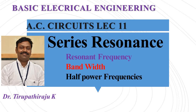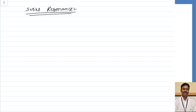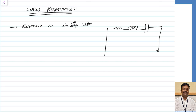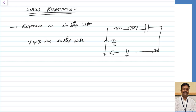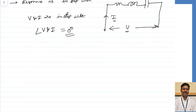Good morning all. Today we are going to discuss series resonance. Resonance means in step with — the meaning of resonance is that the circuit is at resonance or in step when the voltage and current are in phase with each other. That means V and I are at the same phase, or the angle between V and I is equal to zero degrees, under which condition we say the circuit is under resonance condition.